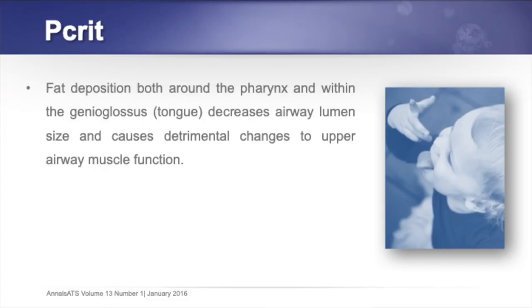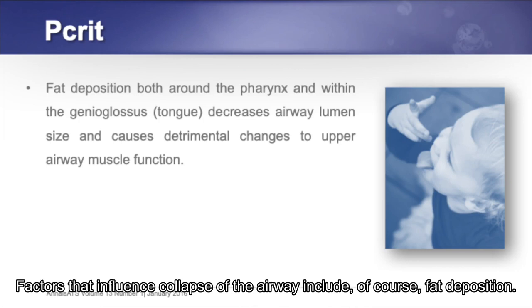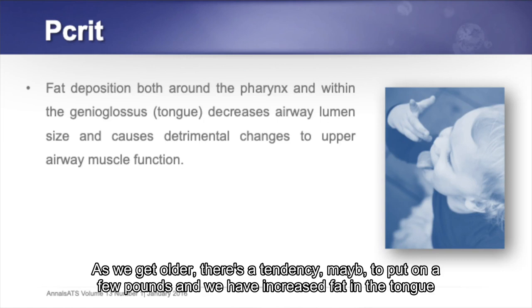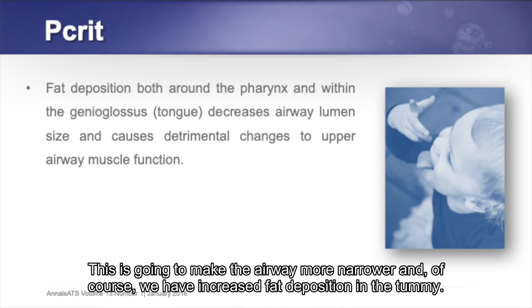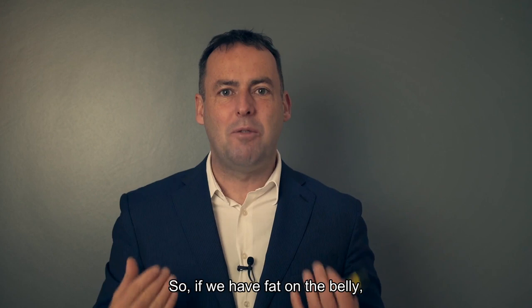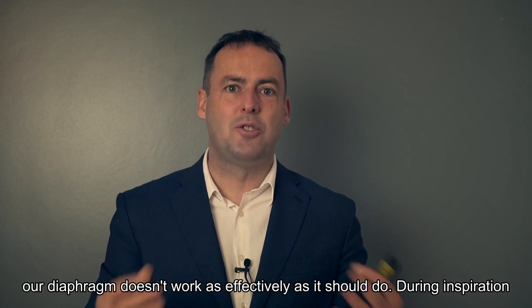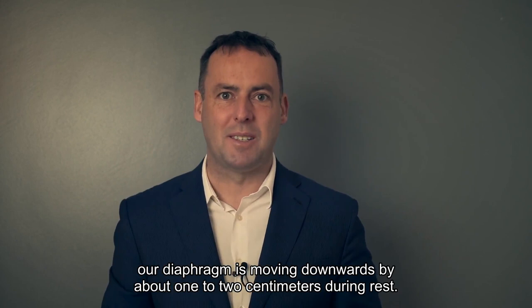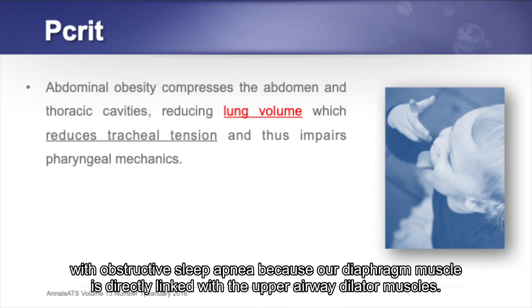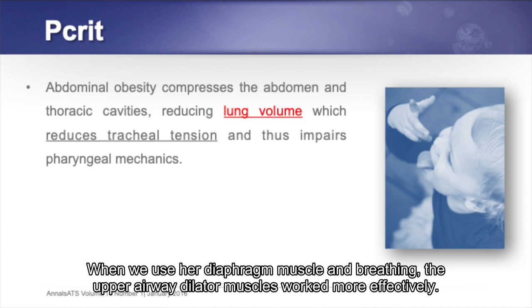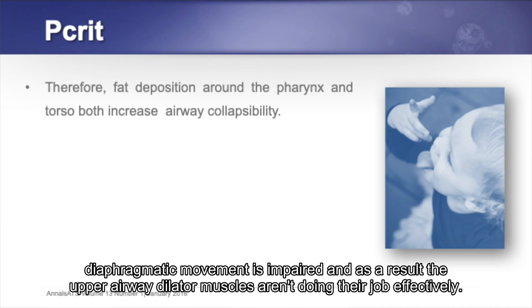Factors that influence airway collapse include fat deposition. As we age, fat in the tongue means the tongue occupies more space in the mouth; increased fat in the throat narrows the airway; and fat on the belly means the diaphragm doesn't work as effectively. During inspiration the diaphragm moves downward by about one to two centimeters at rest, but belly fat compresses that movement. Diaphragm muscle activity is directly linked with the upper airway dilator muscles — when we use the diaphragm, the upper airway dilator muscles work more effectively.